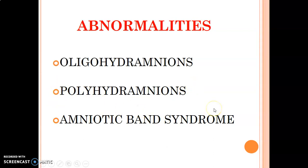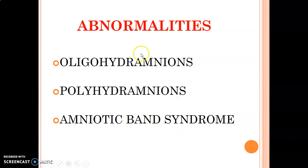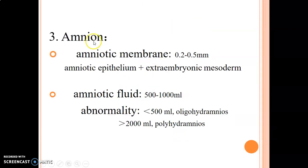In amniotic band syndrome, the amniotic membrane forms bands around the fingers or digits, and that can cause amputation of the digits by impairing blood supply — when you compress the digit, you impair blood supply to the distal end, causing amputation.